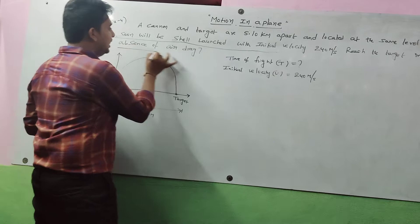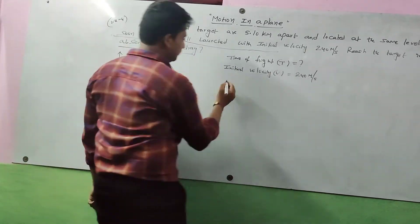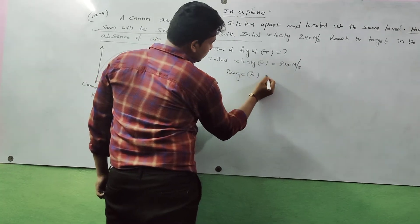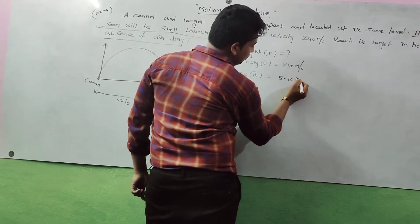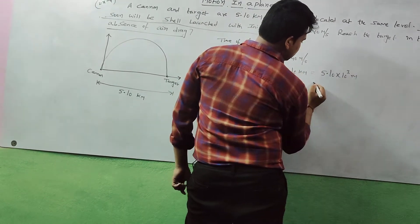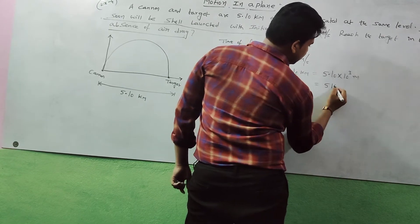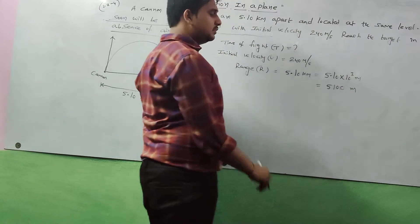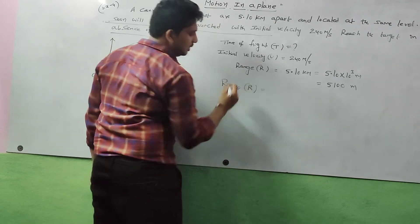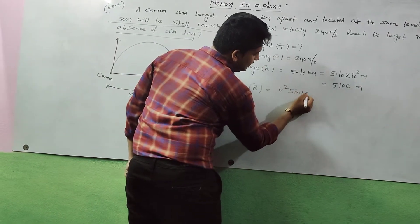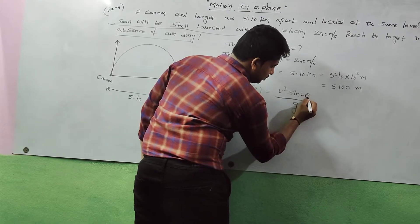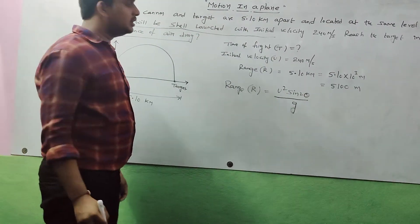The range R is given as 5.10 kilometers. Converting into meters: 5.10 into 10 cubed, which gives us 5100 meters. Now apply the range formula: R = u² sin2θ / g.